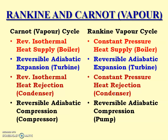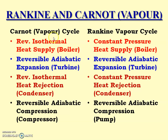The last process name is the same, but the component has changed. In Carnot vapor cycle, the process is reversible adiabatic compression and it happens in a compressor. While in Rankine vapor cycle, the process is also reversible adiabatic compression, but this process takes place in a pump, whereas in Carnot vapor cycle it happens in a compressor.